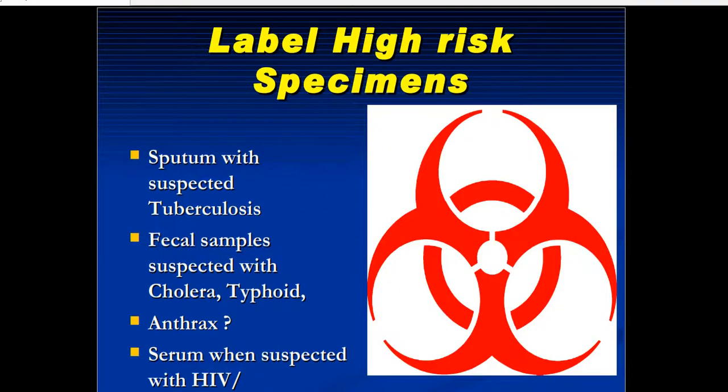After collection of the sample, you have to label it as a high-risk specimen. When transporting from the ward to the lab, label the sample if it is a high-risk sample. Blood samples, sputum samples, fecal matter samples, and urine samples are all highly contaminated, high-risk samples. They should be closed in a leak-proof container, an appropriate container should be used for collection, and the container should be labeled as a high-risk specimen when transporting.